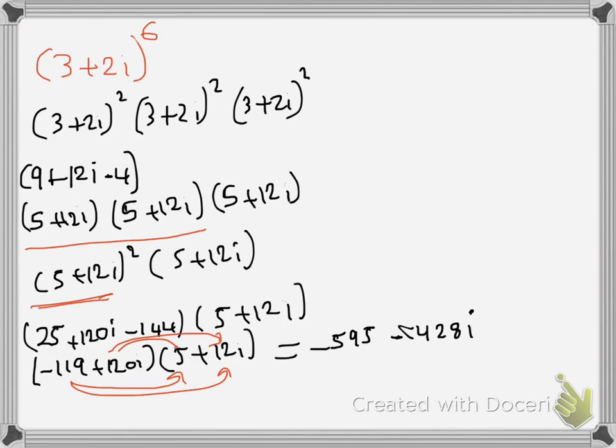And then I have got 120i times 5 which is 600, so it is plus 600i. And then 120i times 12i, it is 1440. And because it is i times i, so it is minus 1440.